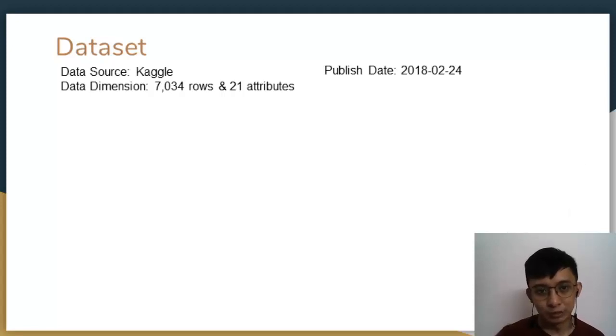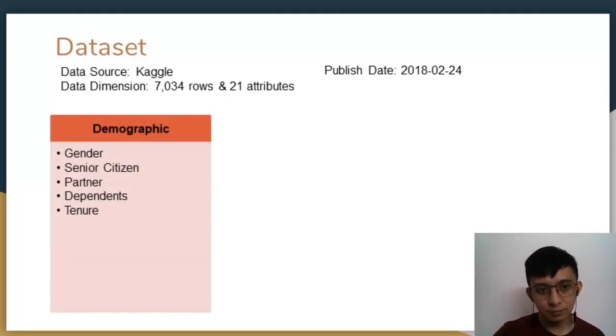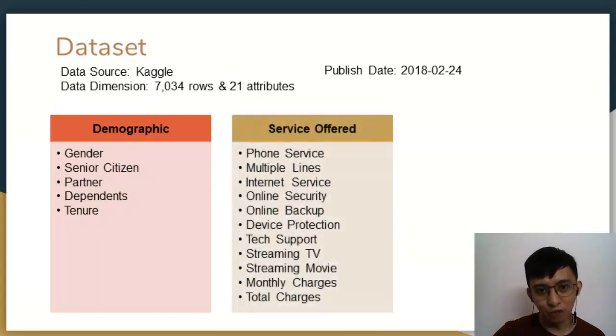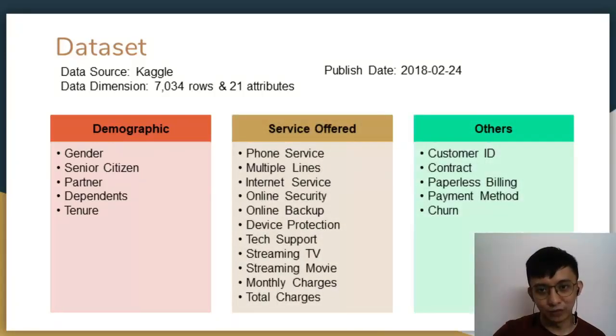Among these 21 attributes, it can be further categorized into three major fields. The first one is the demographic field. The second part is the service offered by a telco. And the third part is the other field. Now, we have all the raw data ready. But we are not ready to jump into the analysis part. Before we do the analysis on the data, we need to pre-process the data and transform it into a form that's useful for analysis. I will leave the pre-processing part for my friends to explain more in detail.